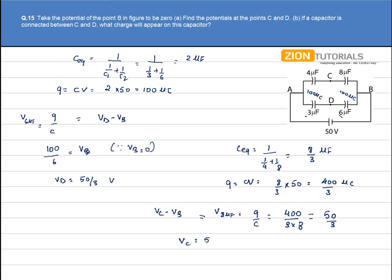Vc is equal to 50 by 3 volts since Vb is zero. These are the potential at point C and D. This is our answer for the first part. In second part, if a capacitor is connected between C and D, what charge will appear on this capacitor?